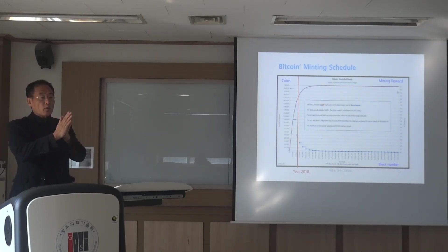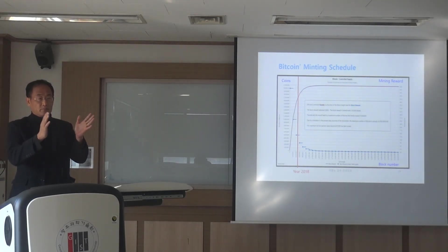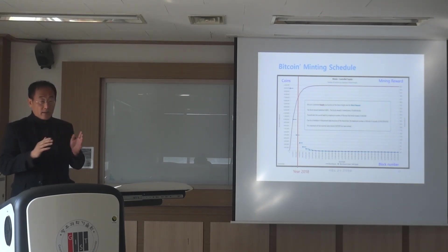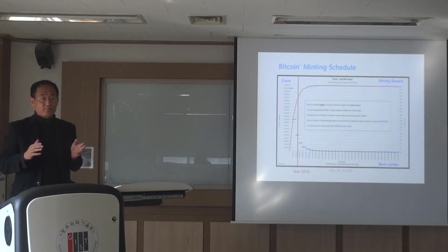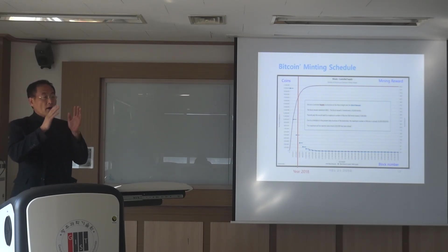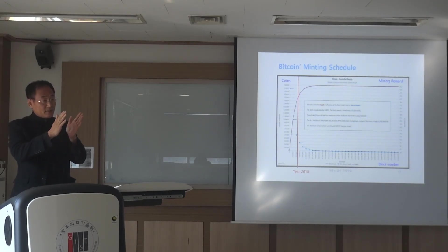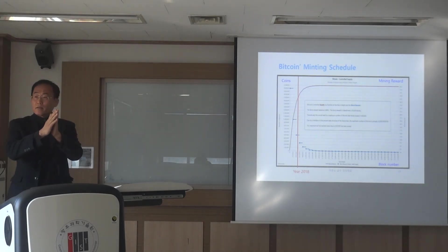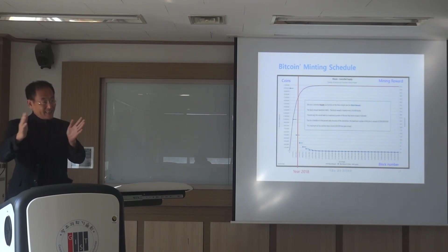50 Bitcoin are created and minted. The block speed is 10 minutes, so each 10 minutes that pass, there are going to be 50 new Bitcoin created.